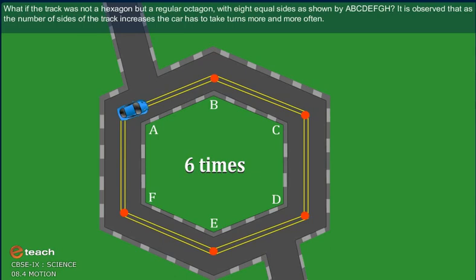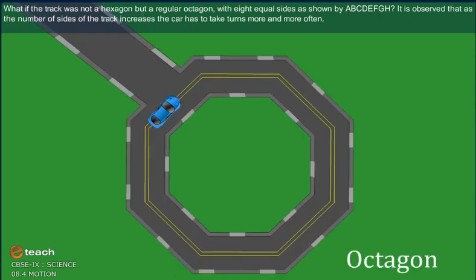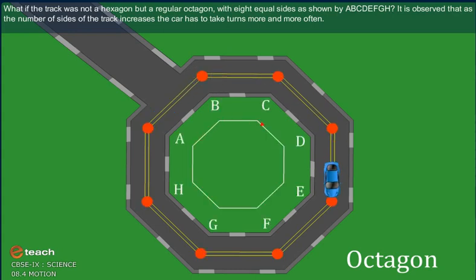What if the track was not a hexagon but a regular octagon with eight equal sides as shown by A, B, C, D, E, F, G, H? It is observed that as the number of sides of the track increases, the car has to take turns more and more often.